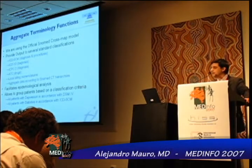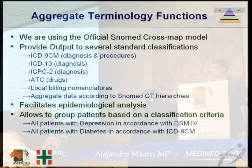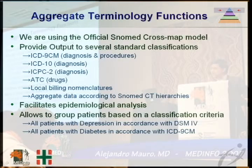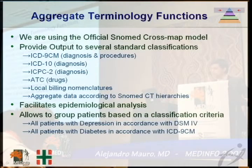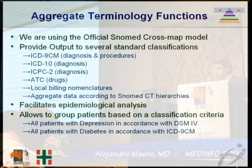As the aggregate terminology function, we are using the official SNOMED CT model. This provides output to several standard classifications like ICD-9, ICD-10, ICPC, ATC, and local billing nomenclature. This facilitates epidemiological analysis and also allows us to group patients based on classification criteria.